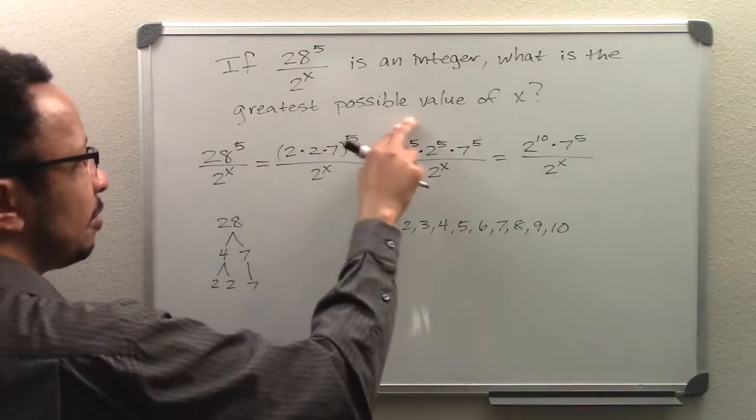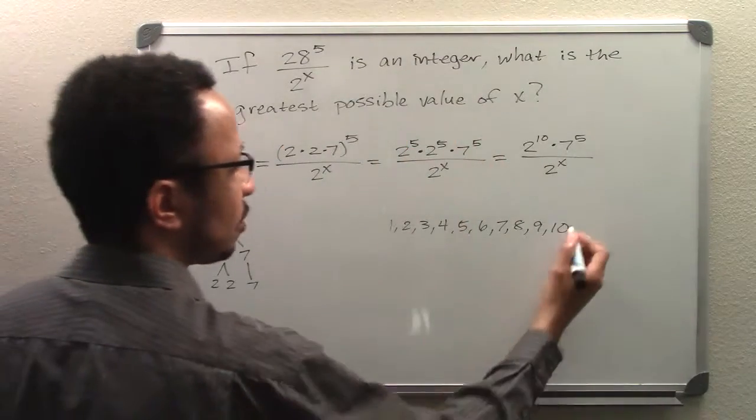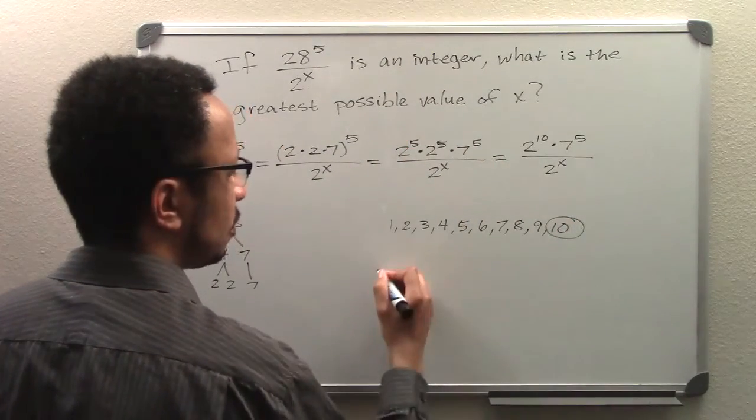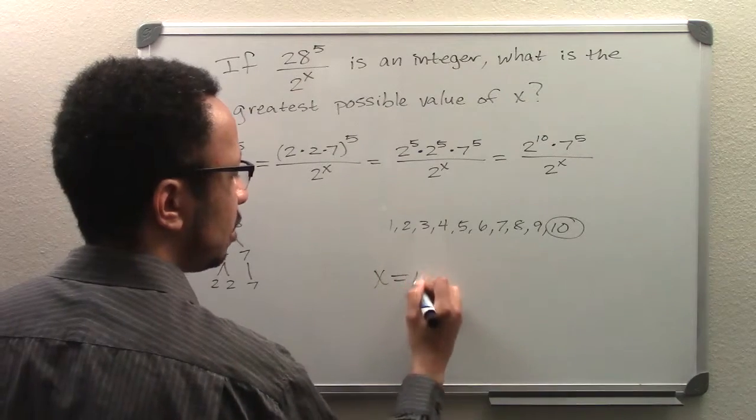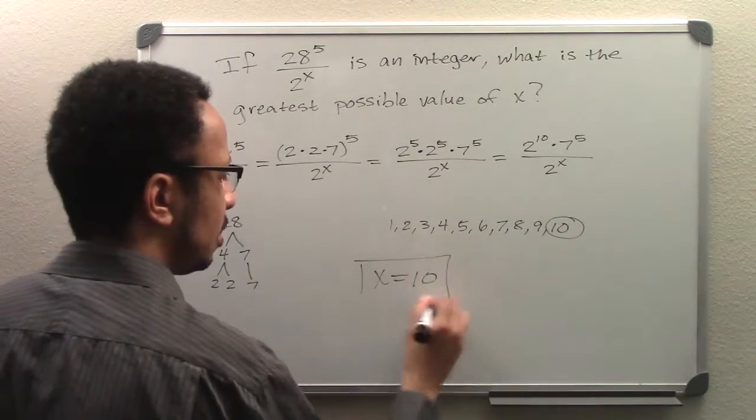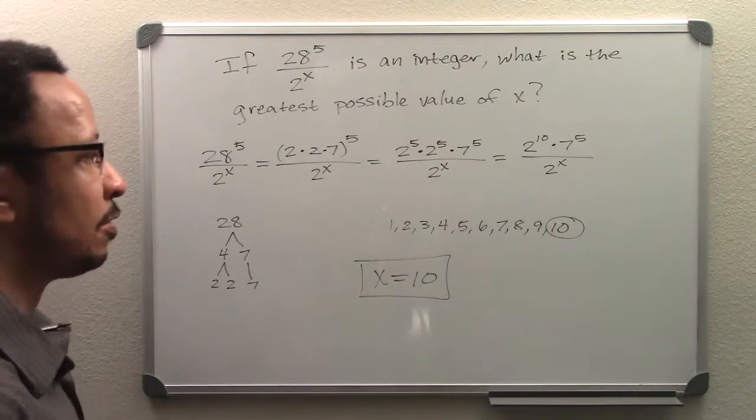And it asks for the greatest possible value of x, so of course that's 10. So x equals 10 is the correct answer for this problem.